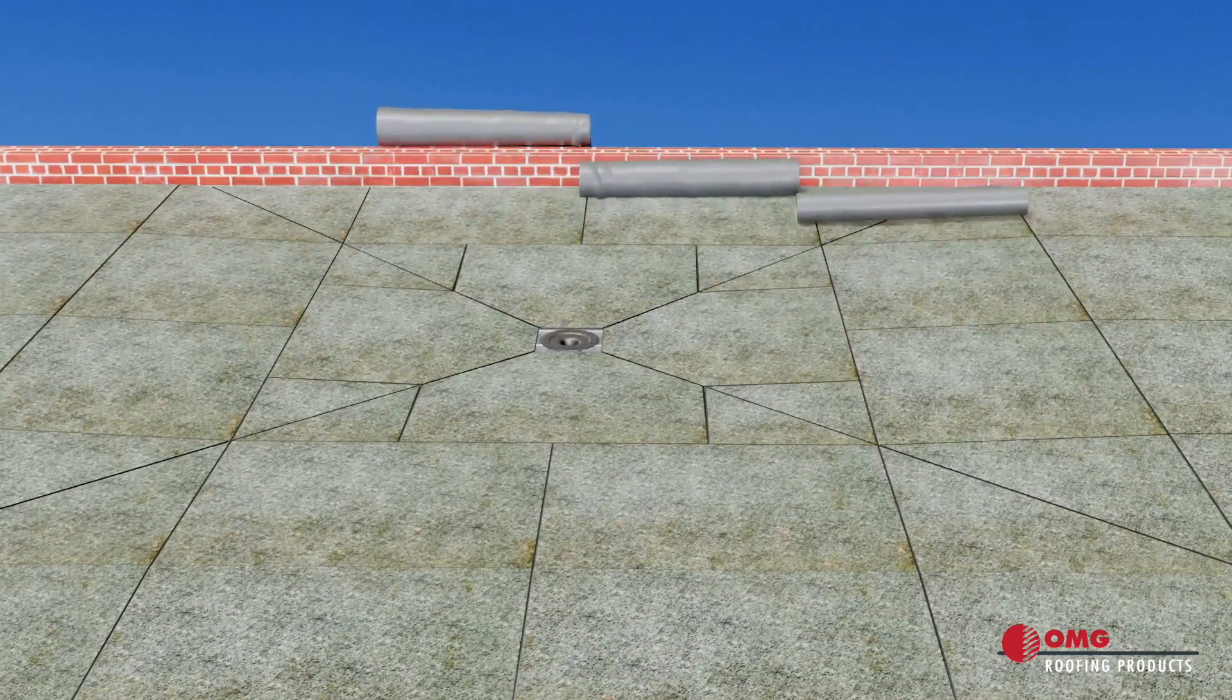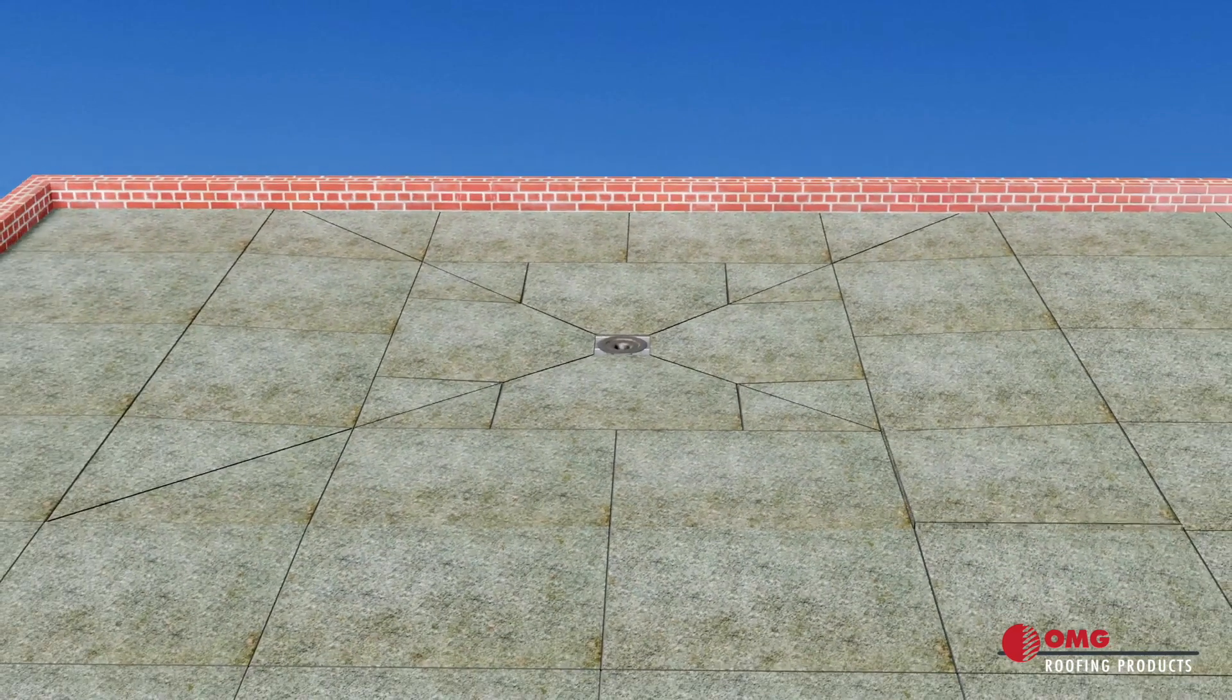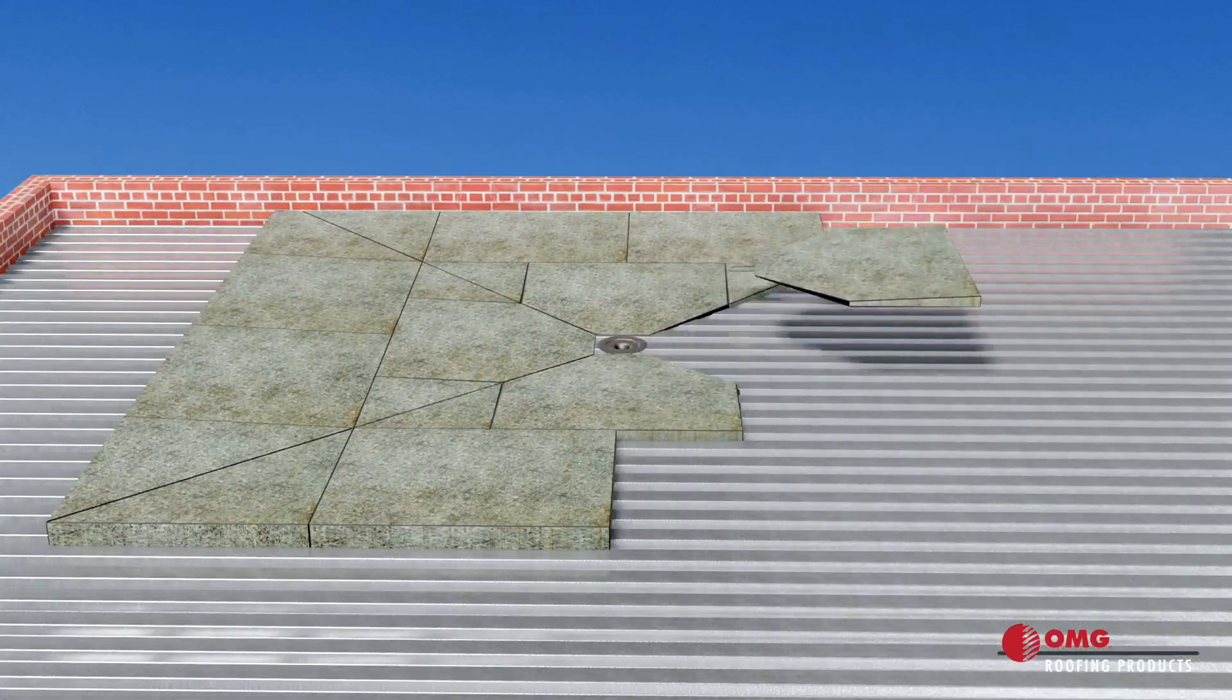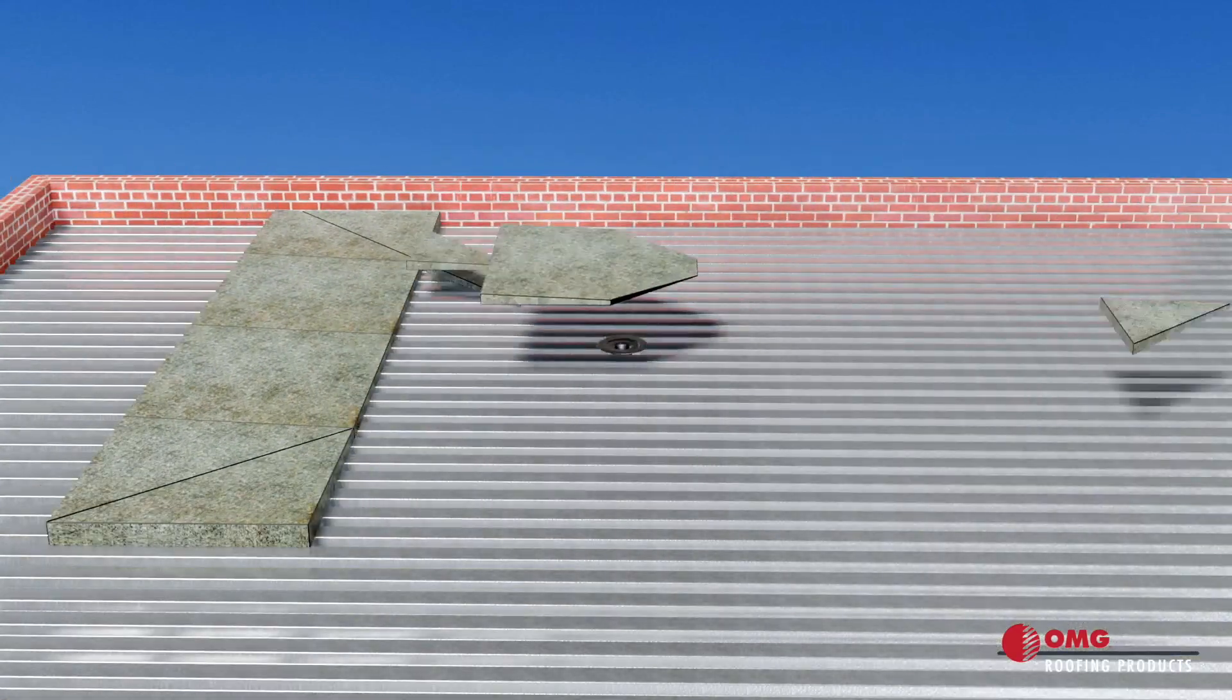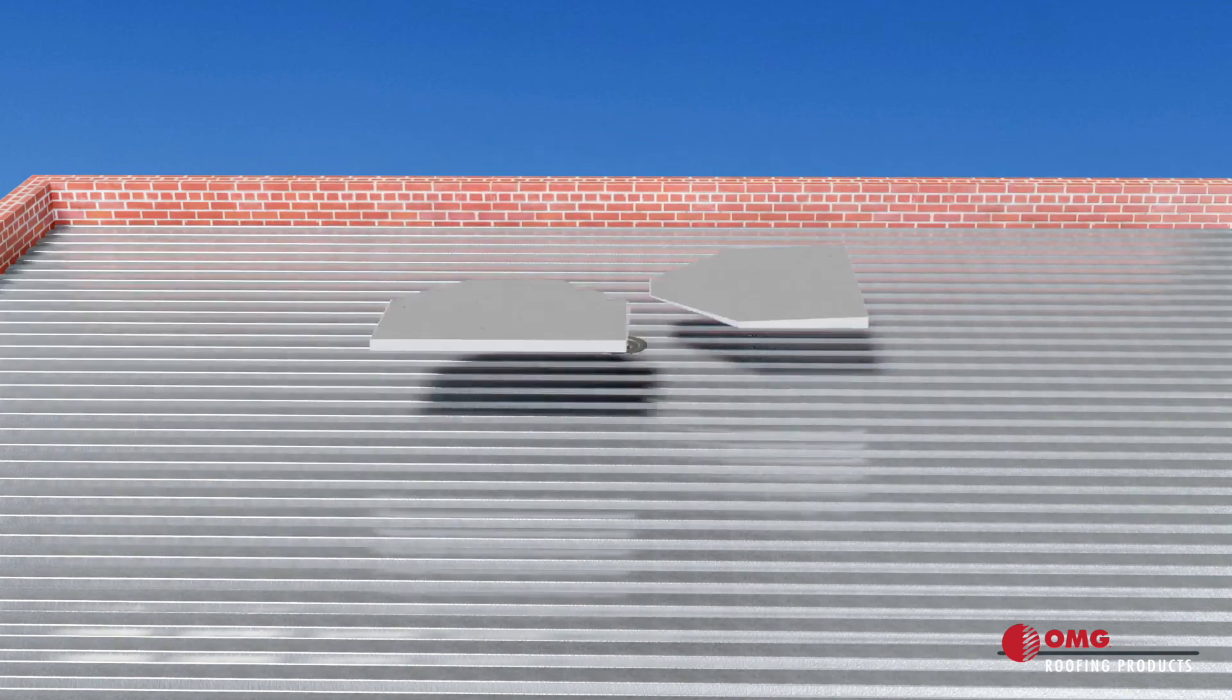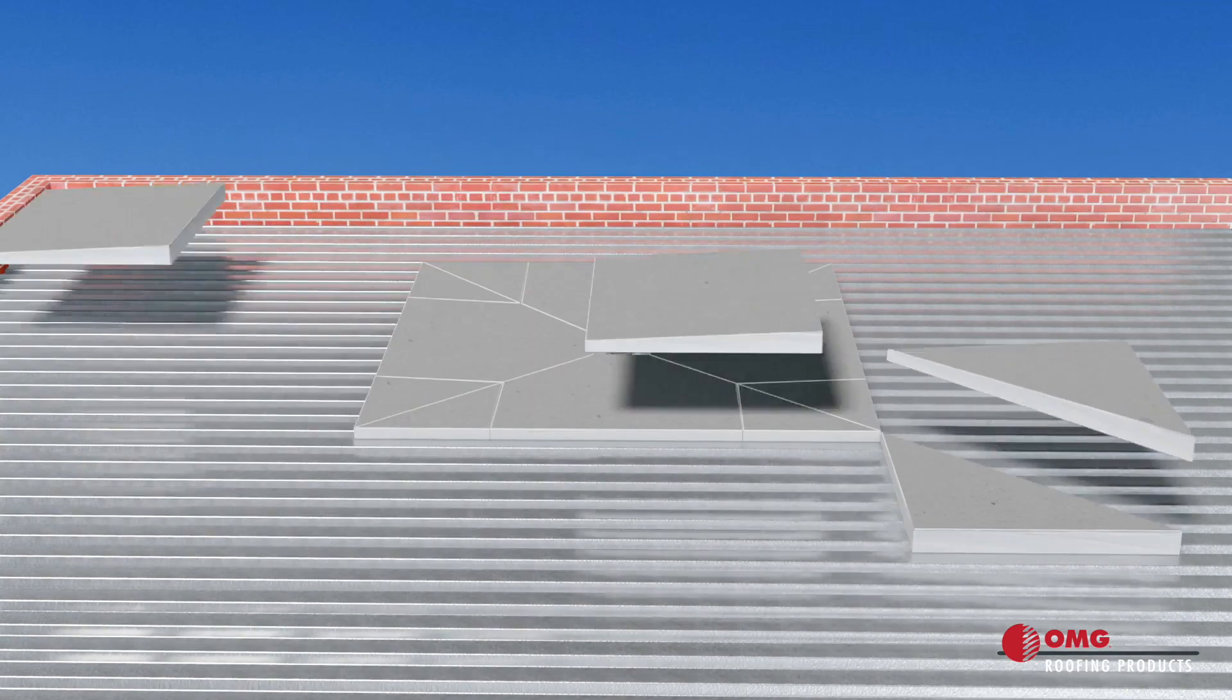After removing the old materials, make sure the drain leader is free of debris and blockages. Install tapered insulation to create a drain sump.